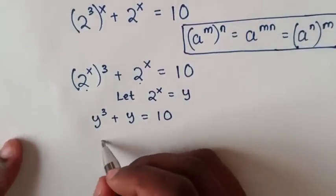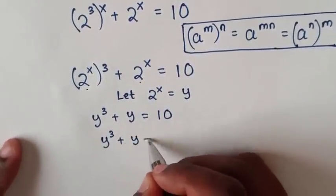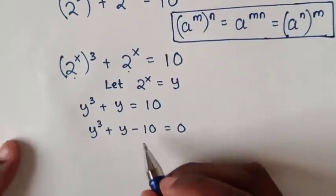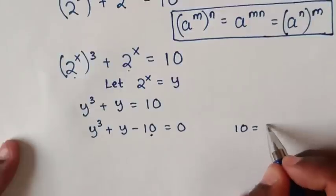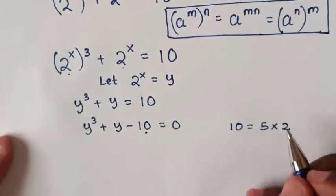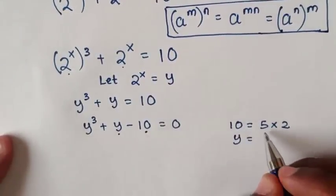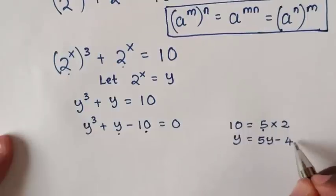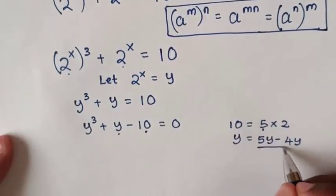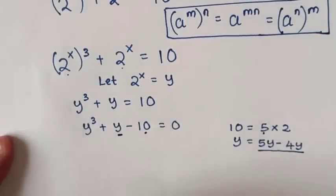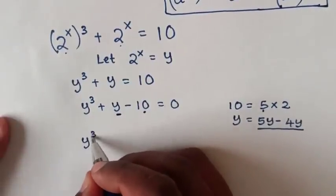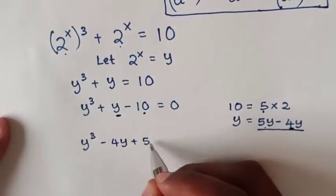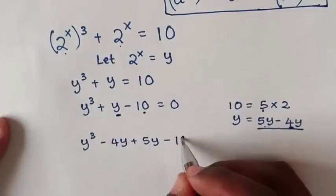We take 10 to the left side, so it will be y power 3 plus y minus 10 is equal to 0. To solve this cubic equation by factorization: to get 10, the factors are 5 and 2, so 5 times 2. To get y, we write 5y minus 4y equals y. We substitute 5y minus 4y into y, so the equation becomes y power 3 minus 4y plus 5y minus 10 is equal to 0.